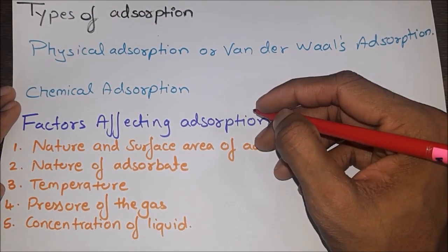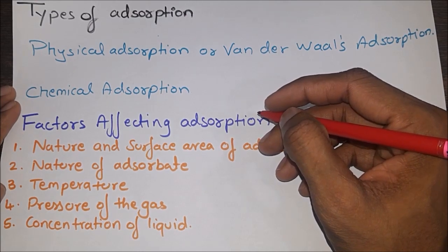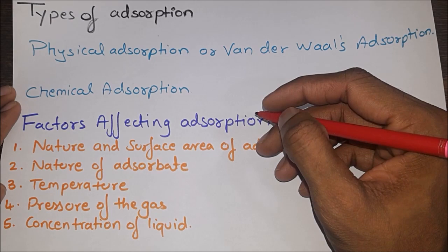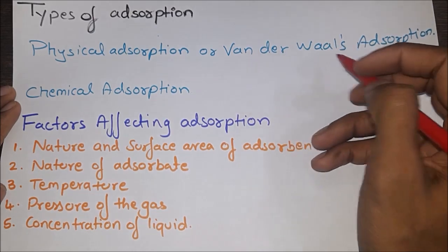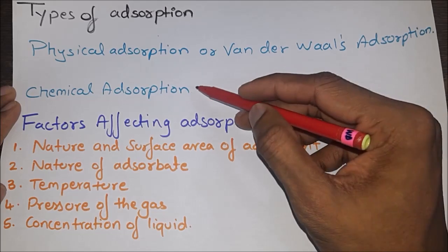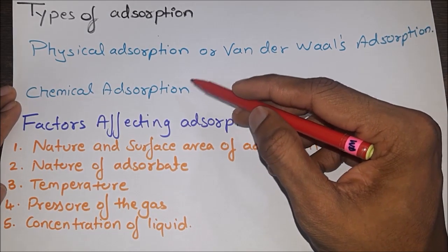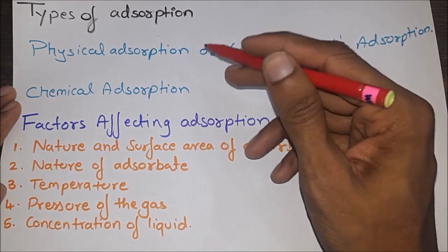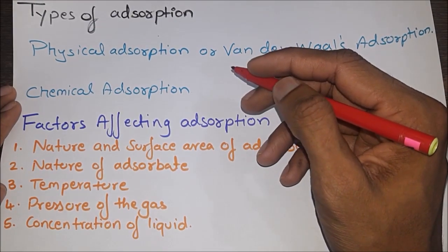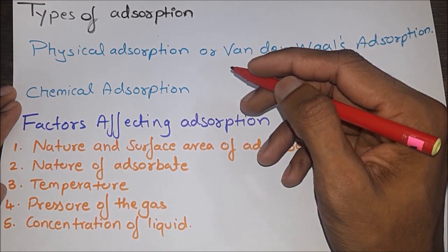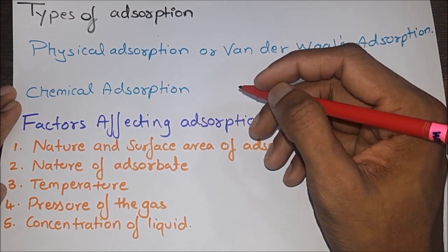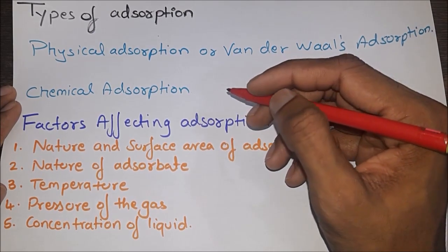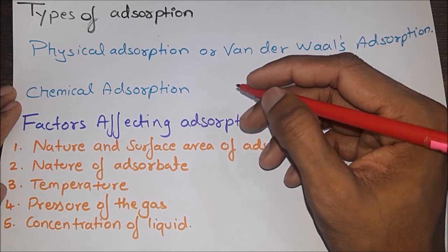Types of adsorption: depending upon the type of forces operating between the molecules involved in adsorption, it is divided into two types — physical adsorption (also known as van der Waals adsorption or physisorption) and chemical adsorption (known as chemisorption). Physical adsorption is a type in which weak van der Waals forces of attraction are developed between surface molecules of adsorbent and molecules of adsorbate. It is a common, non-specific, reversible process. The adsorption layer is multi-molecular. Rate of adsorption is very high and heat of adsorption is low.